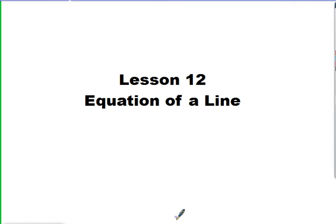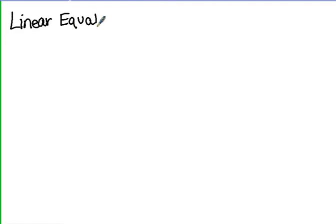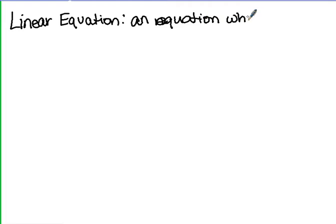Lesson 12, equations of a line. A linear equation is an equation whose graph forms a line. We're going to be dealing with linear equations in the next several lessons. A linear equation typically has an x and a y value. It's an equation whose graph is a line.